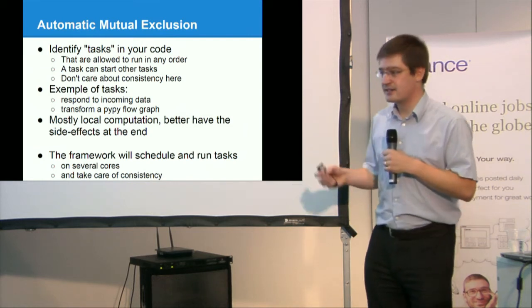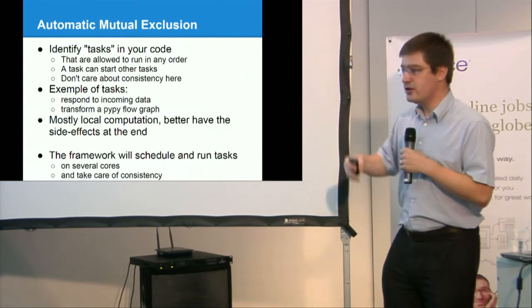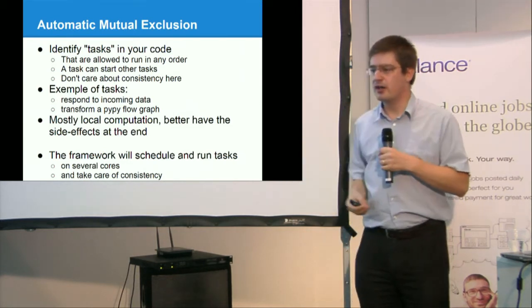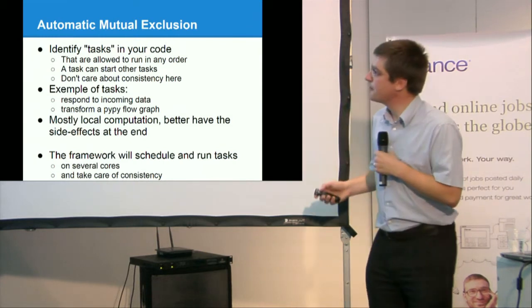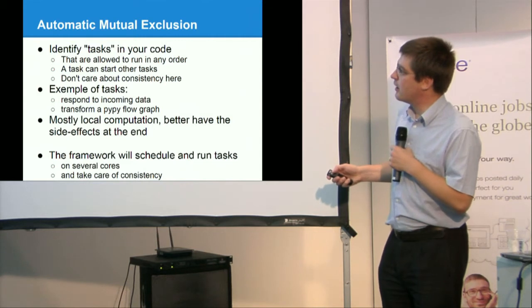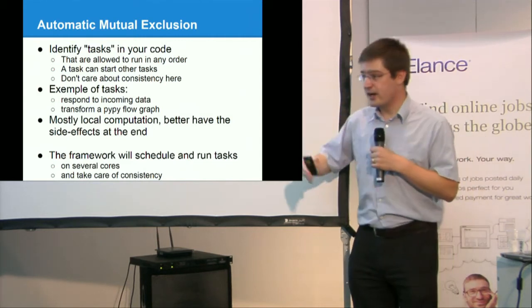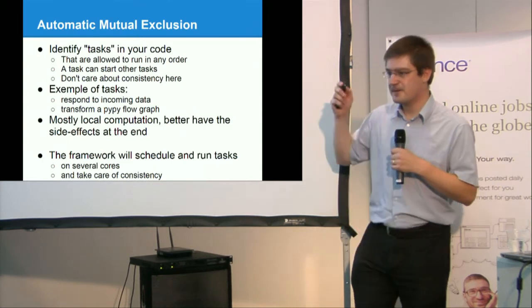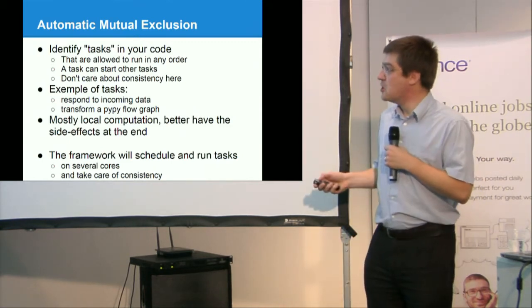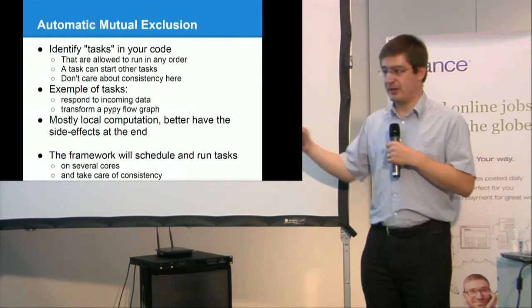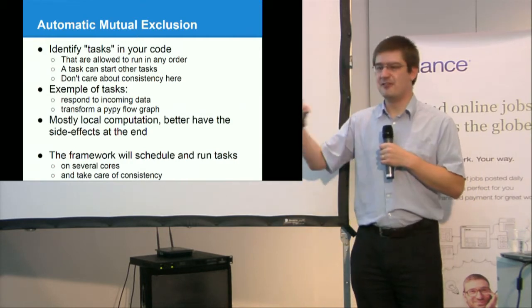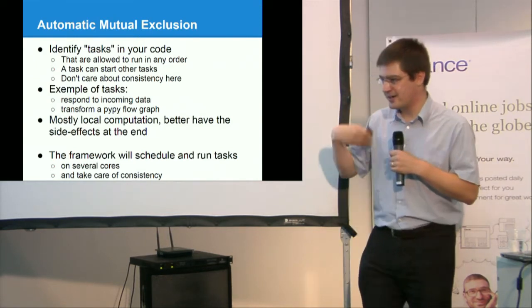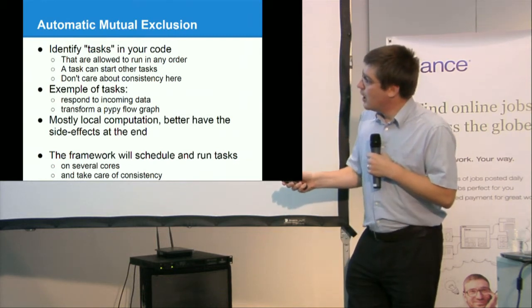For this, you have to identify tasks in your code. What is a task? A task is a function that is a list of functions that are allowed to run in any order. That is, good candidates for you to have threads. A task can start with a task, of course. And don't care about consistency here. That is, the task doesn't have to lock or unlock objects. It will just run and process its data as if it was alone. So an example of good tasks. So you respond to incoming data. Typically, you are in an asynchronous framework. You just receive a web connection. So what do you do? You run this function. I initiate this. I will return this HTML code. And so on.